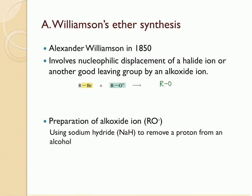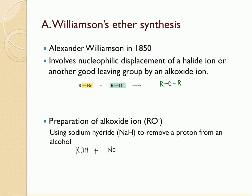This is a symmetrical ether since the two R groups are the same. The very first step is the synthesis of an alkoxide ion. To prepare the alkoxide, you take the corresponding alcohol and react it with sodium hydride, which acts as a base abstracting the hydrogen from the alcohol. The bond between oxygen and hydrogen breaks, forming the alkoxide ion.